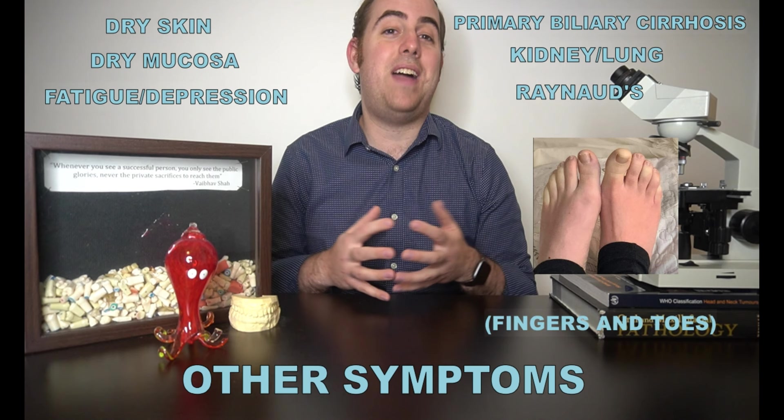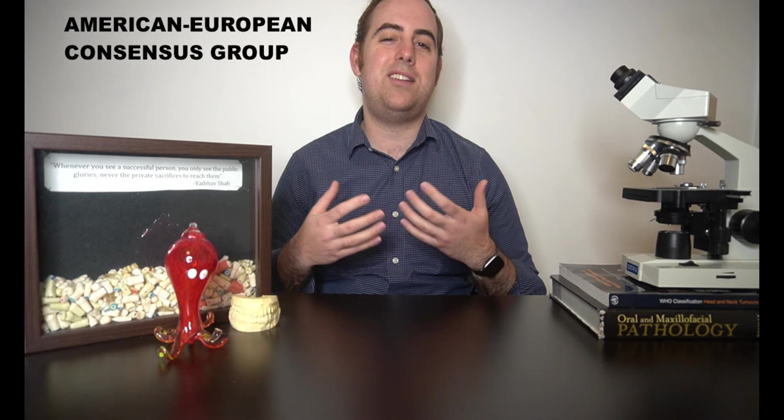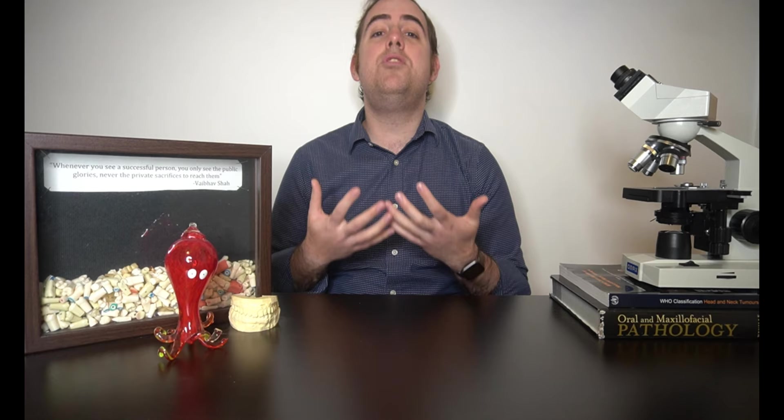Sjogren's syndrome has a very complex diagnostic scheme and I'll be going over the two major classification systems in this video. The first is the American-European consensus group and the second is shorter and simpler and it's the American College of Rheumatology criteria. In my practice I usually use the American-European consensus group as it includes subjective findings which are experiences of the patient in addition to objective findings which are things that I can observe.